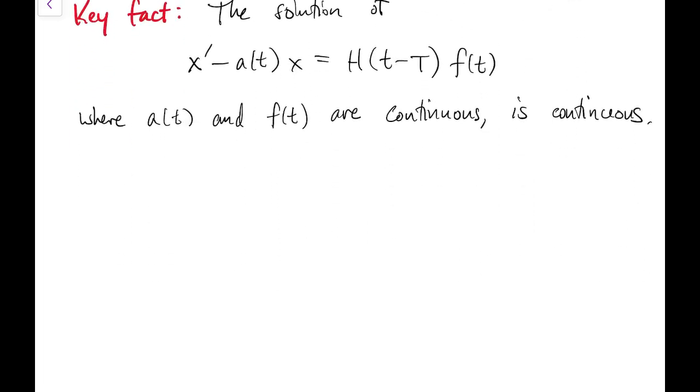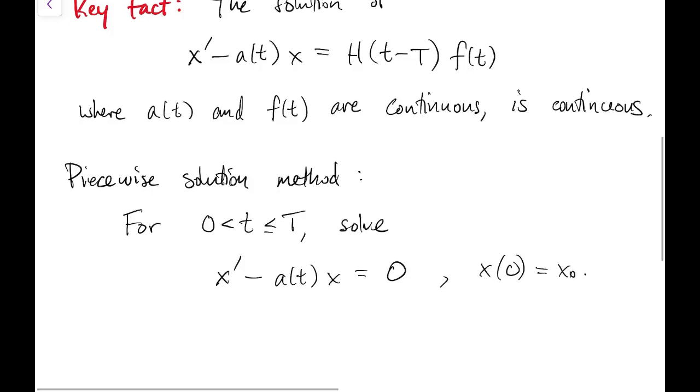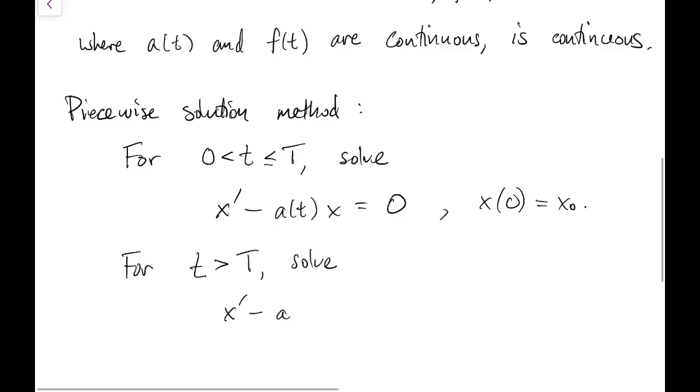That allows us to have a pretty straightforward method for finding the solution. We just do things piecewise. So for the first piece between 0 and capital T, the forcing function is absent or it equals 0. So we have this homogeneous initial value problem that we know how to solve. And then when the switch is turned on, then we solve with the forcing function that's now on and the initial condition is now at capital T and it comes from the first piece.